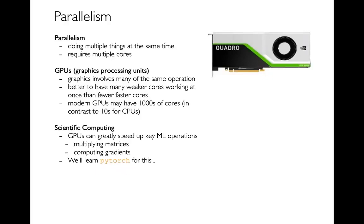PyTorch is also going to help us run code on GPUs. We'll be able to take two matrices, push them over to a GPU, multiply them together, and it'll feel like it's magically going faster than running on a CPU. It doesn't take a lot of code to move things around. PyTorch is very powerful both in terms of calculus and using GPUs.